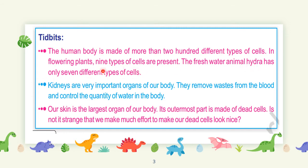The freshwater animal hydra has only seven different types of cells. Next, kidneys are very important organs for our body. They remove waste from the blood and control the quantity of water in the body — that is the main function of kidneys.